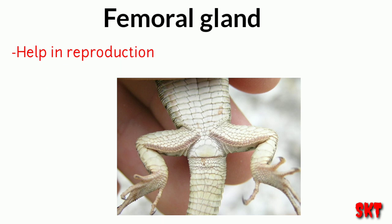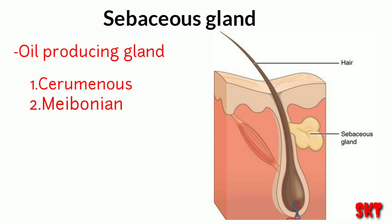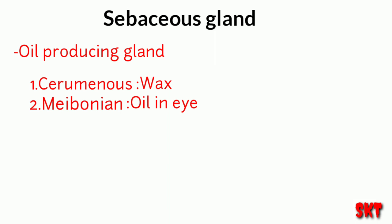These femoral pores produce a type of liquid which hardens to form scales, and these scales help the males to hold females while mating. The sebaceous glands are also called oil-producing glands and they keep our body moist. The sebaceous glands are modified into two types: ceruminous and meibomian glands. The ceruminous glands produce wax in our ears, and meibomian glands produce oily secretion from our eyes.